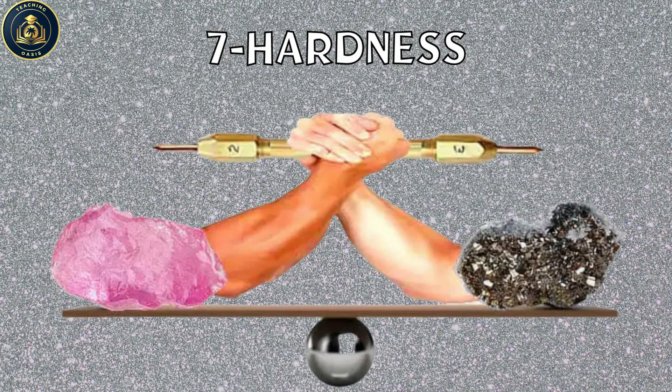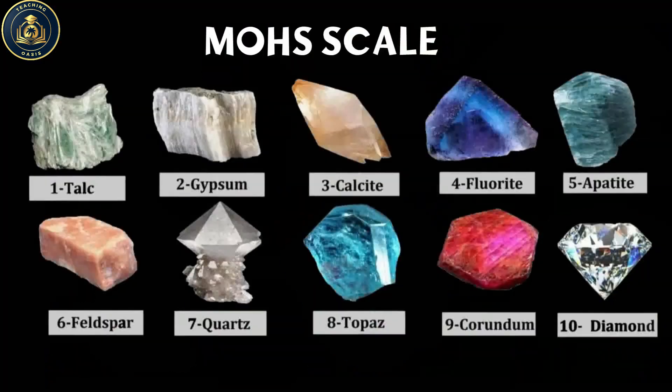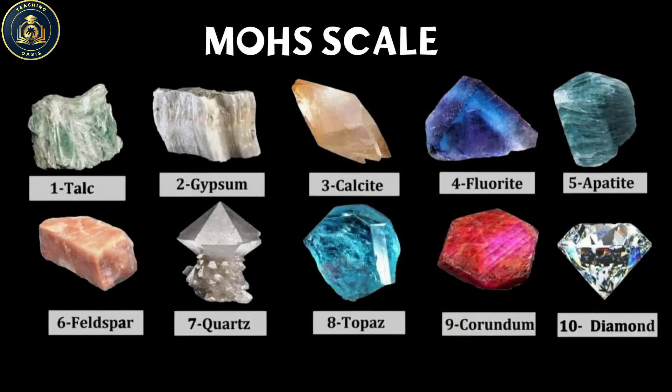Hardness: the Mohs hardness scale is used to rank the hardness of minerals from 1, being the softest, to 10, being the hardest. A mineral can scratch any mineral softer than itself.